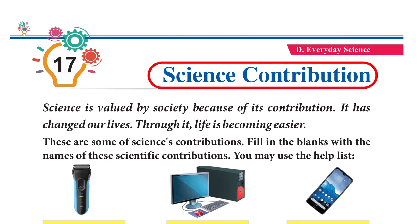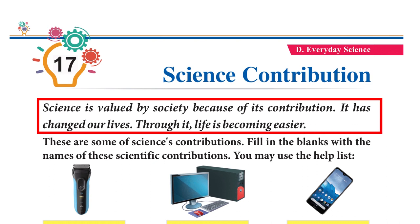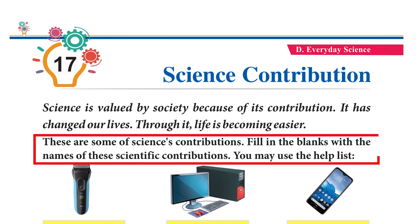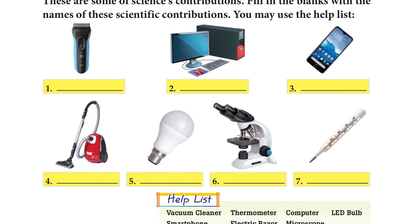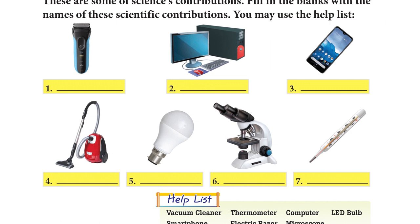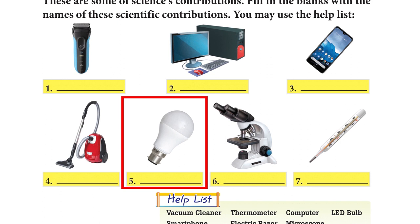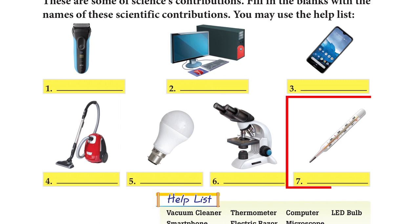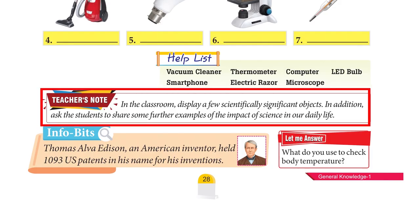Chapter 17: Science Contribution. Science is valued by society because of its contribution — it has changed our lives and made life easier. Fill in the blanks with the names of these scientific contributions: Electric razor, Computer, Smartphone, Vacuum cleaner, LED bulb, Microscope, Thermometer. Teacher's Note: Display a few scientifically significant objects in the classroom and ask students to share examples of the impact of science in daily life. Info Bits: Thomas Alva Edison held 1,093 US patents for his inventions.